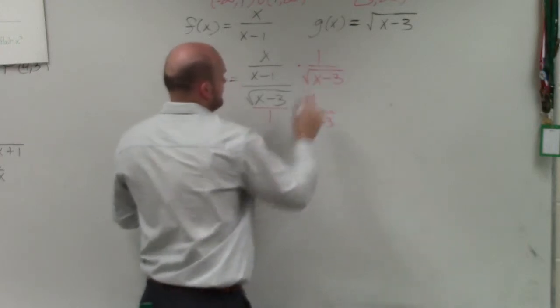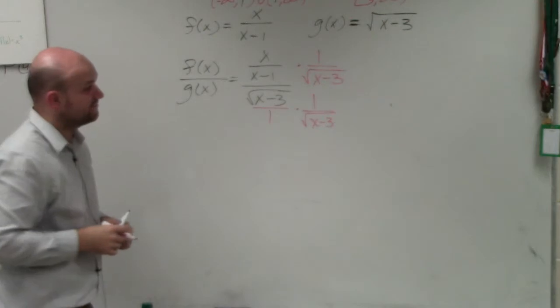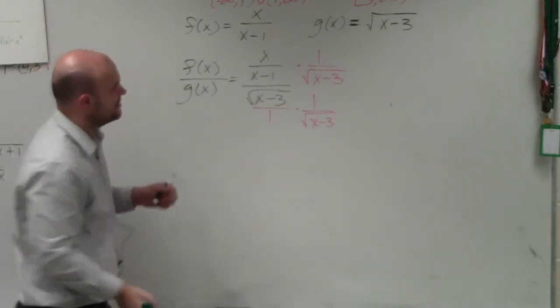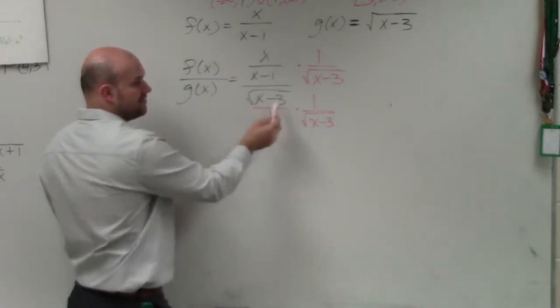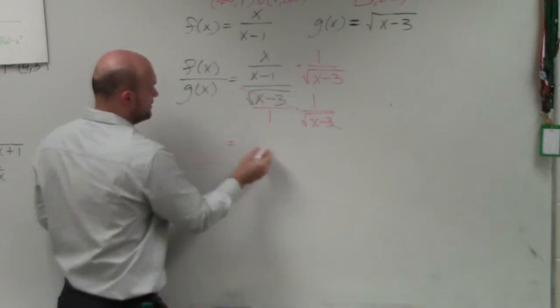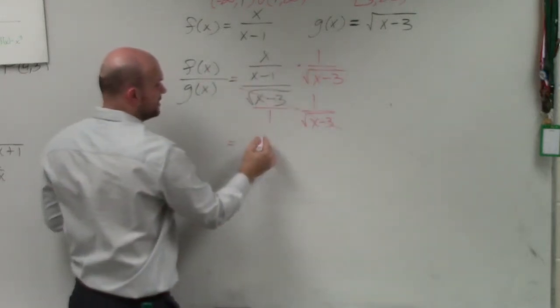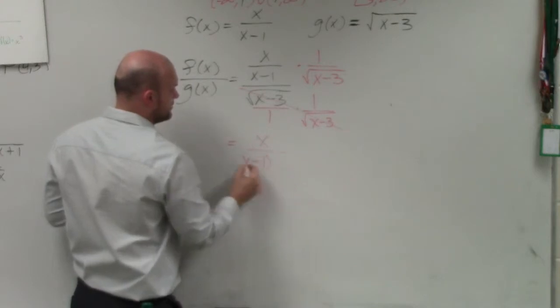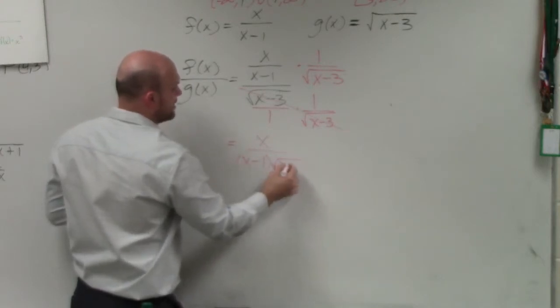And the math would be equality of fractions. You've got to produce equivalent fractions. So now you can see that these two multiply to give us 1. Any number multiplied by its reciprocal is 1. When I multiply, again, straight across, I'm left with x over x minus 1 times the square root of x minus 3.